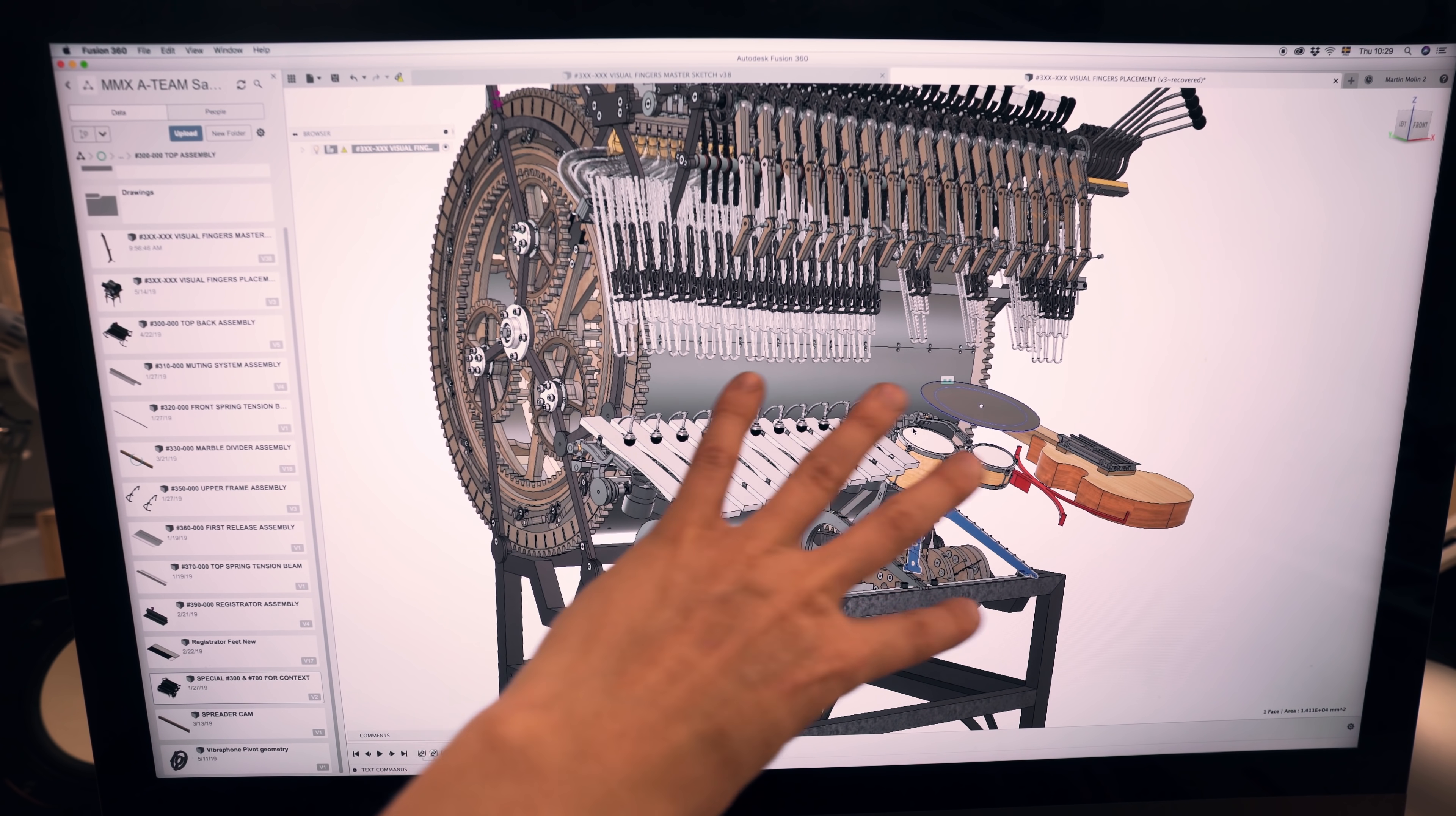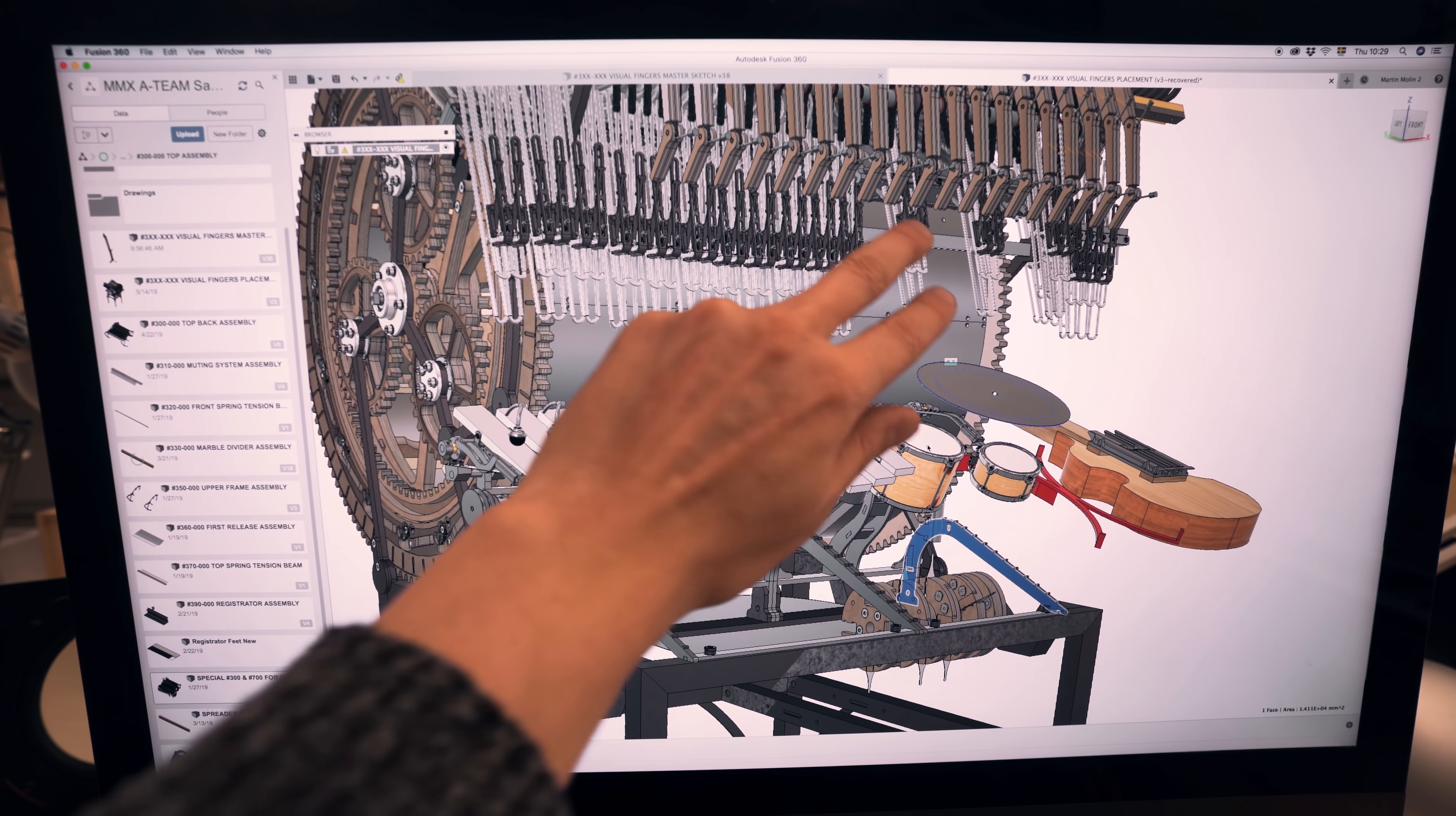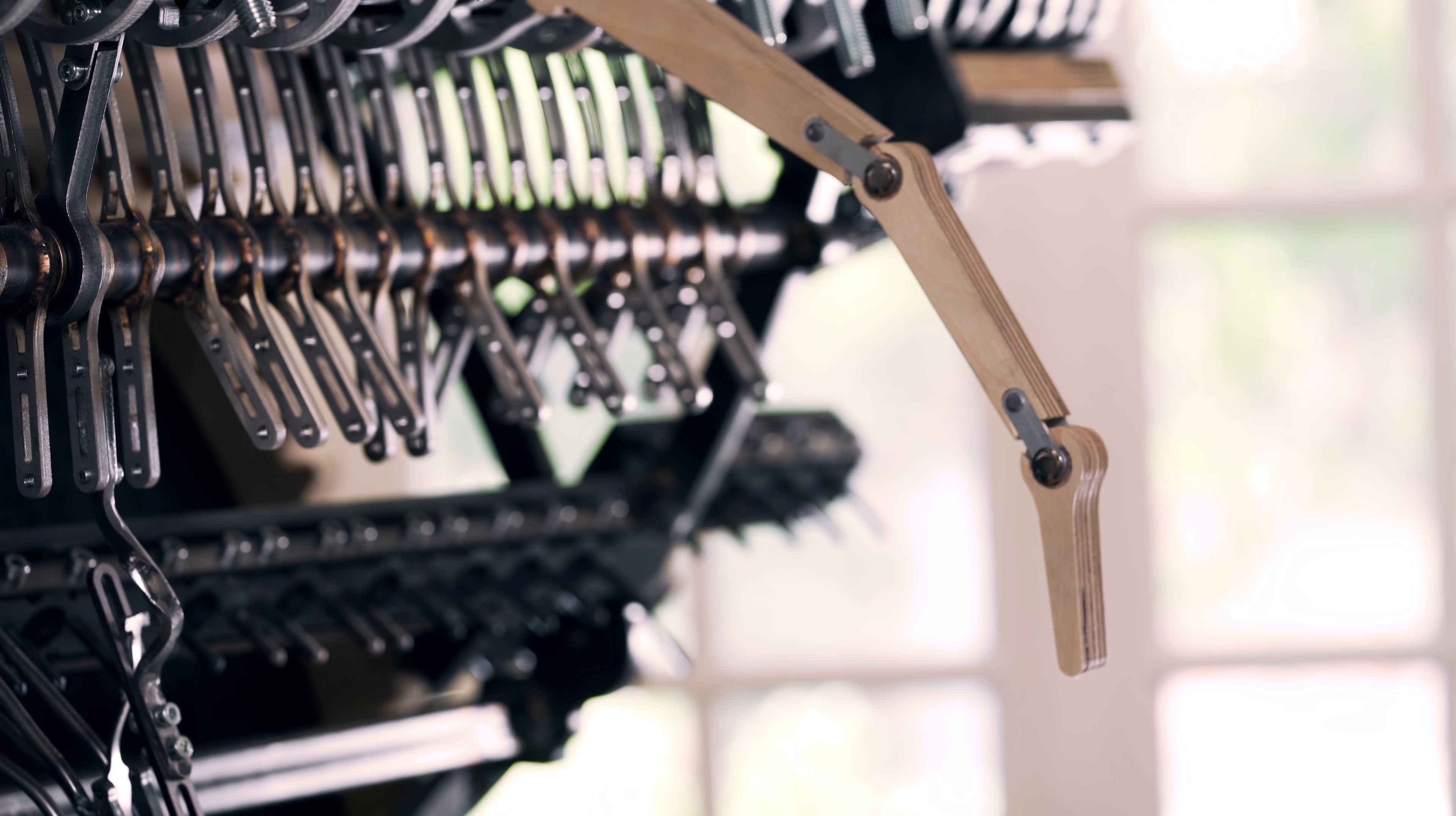So I can very soon weld this together and put the drums onto the Marble Machine X once and for all. Which leads to the fact that I then can bend the drop points. Which leads to the fact that I then can finish the design of these visual fingers. So there's a whole chain effect when designing on the Marble Machine X.